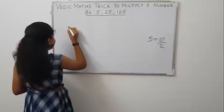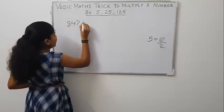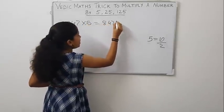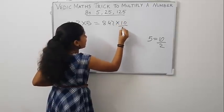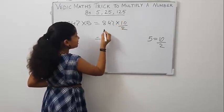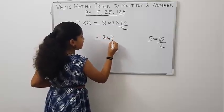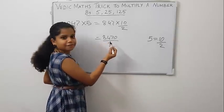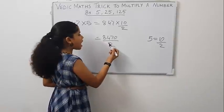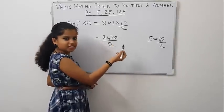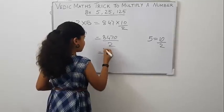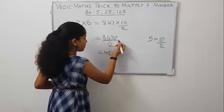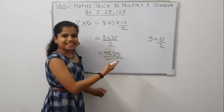Let us take 847 into 5. Write the question like this: 847 into 10 by 2, that is 8470 by 2. Now, we need to divide 8470 by 2 or find the half of 8470. Half of 84 is 42 and half of 70 is 35. This is our answer.